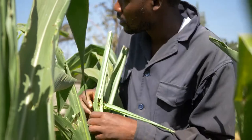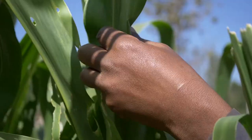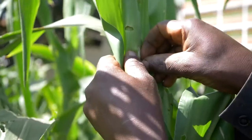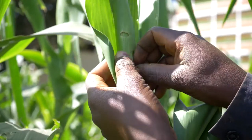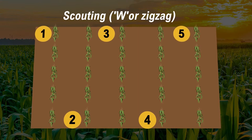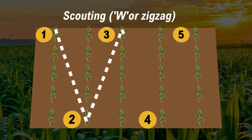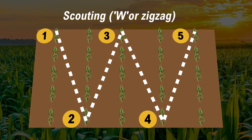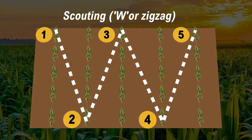Before a farmer decides on which management option to undertake, the first thing required is to scout the farm. Scouting helps the farmer to determine the percentage of infestation by the pest on the farm. In the farm, you establish five working stations which form the letter W. From the first station, you take ten consecutive plants and check the number of infested plants, then record them.